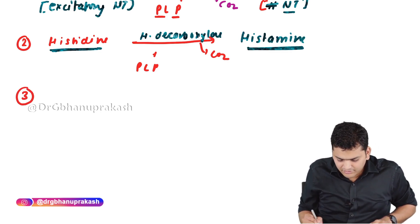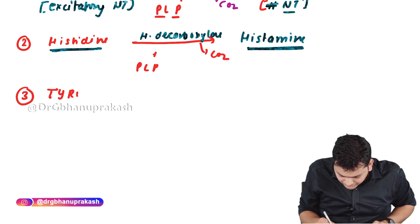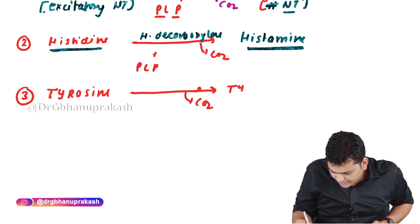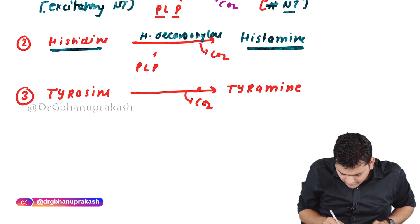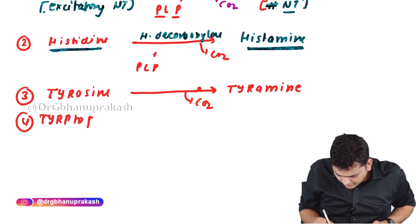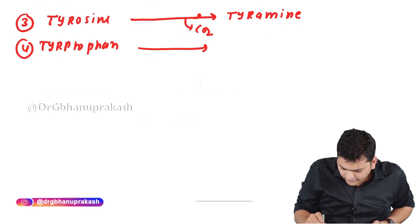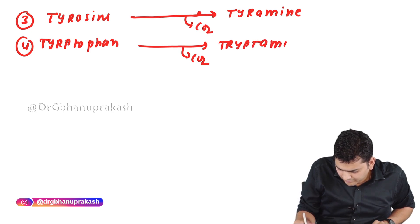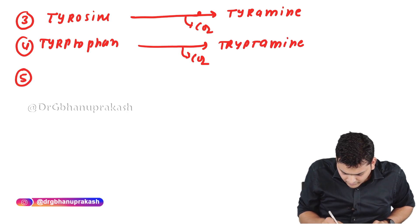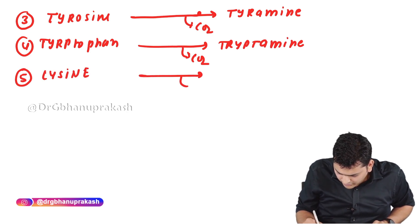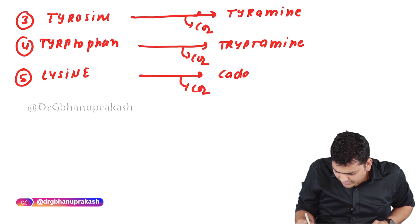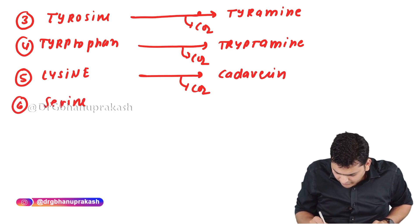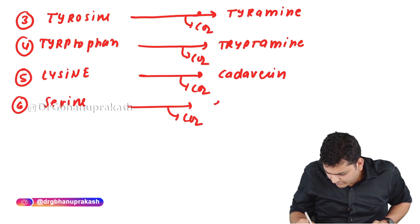Other examples: if you take tyrosine and remove carbon dioxide, you get tyramine. From tryptophan, you get tryptamine. From lysine, you get cadaverine. From serine, you get ethanolamine.